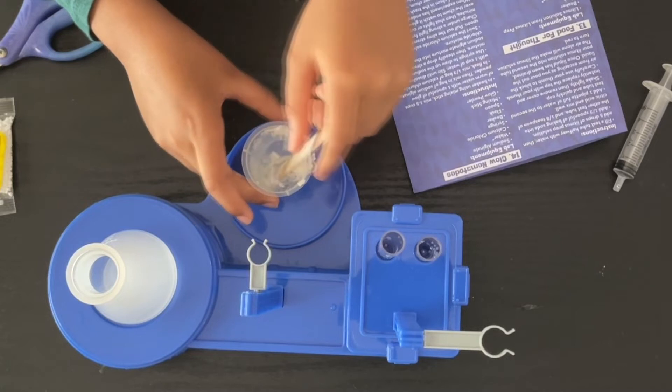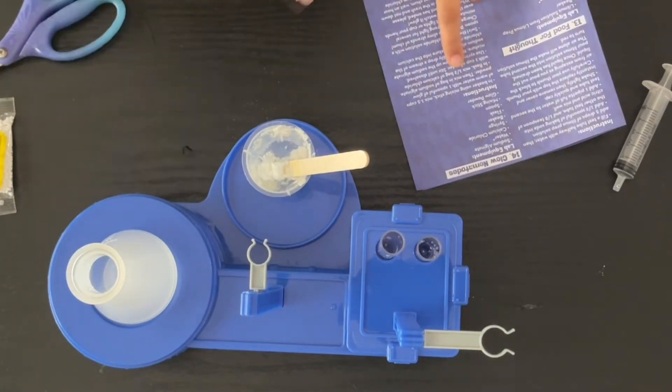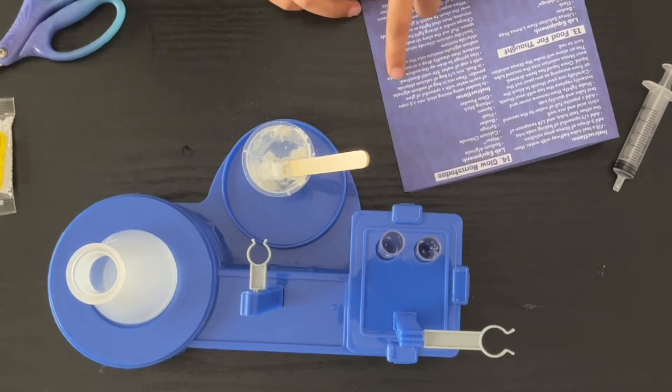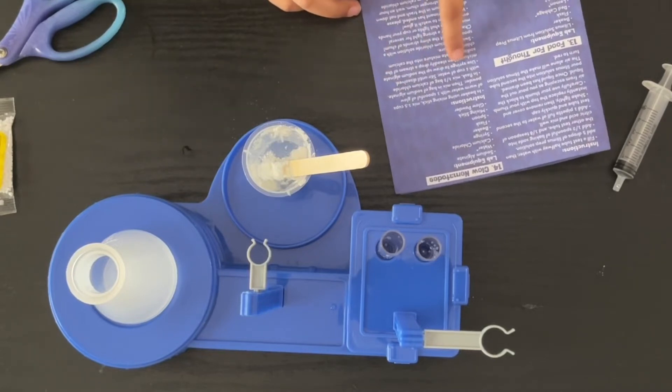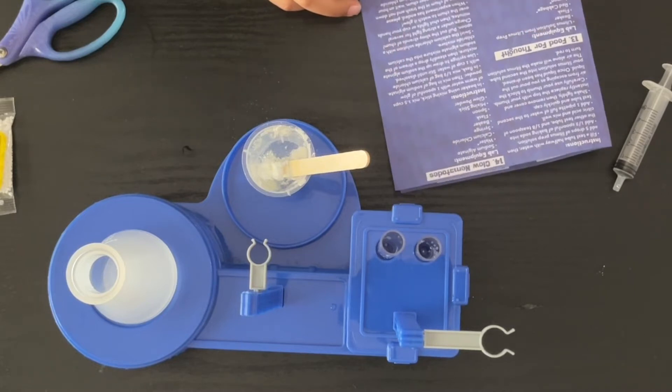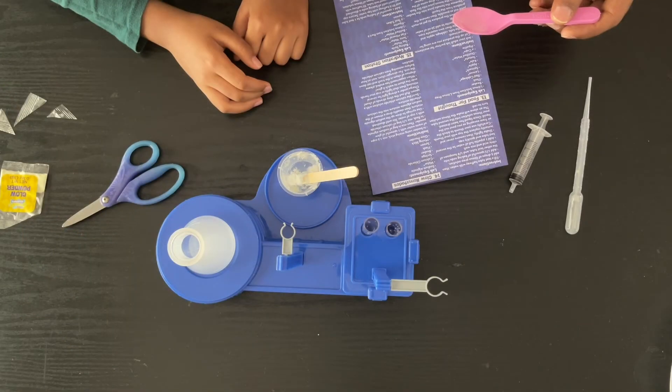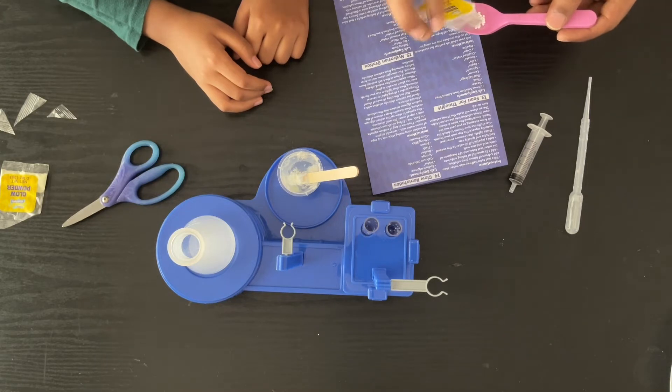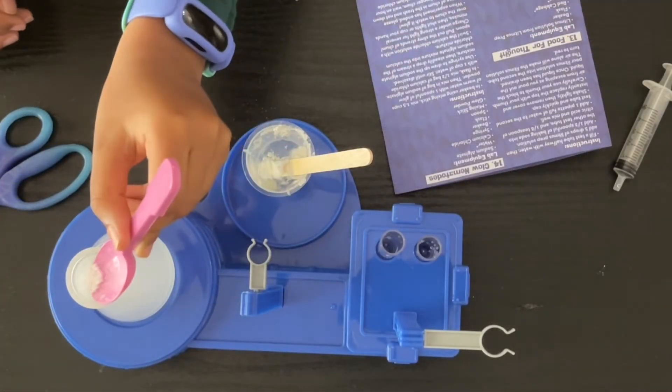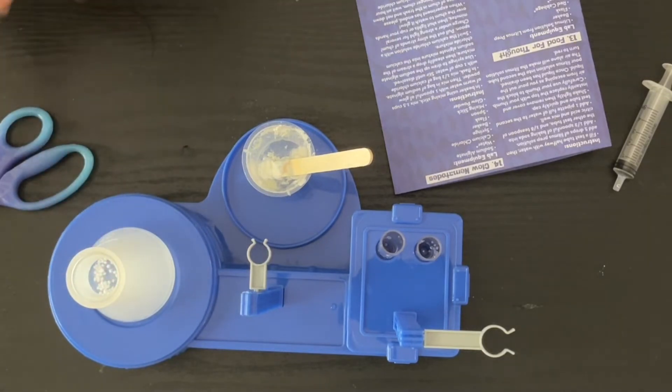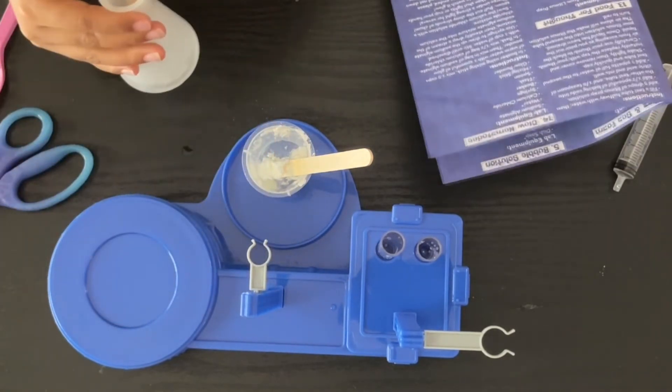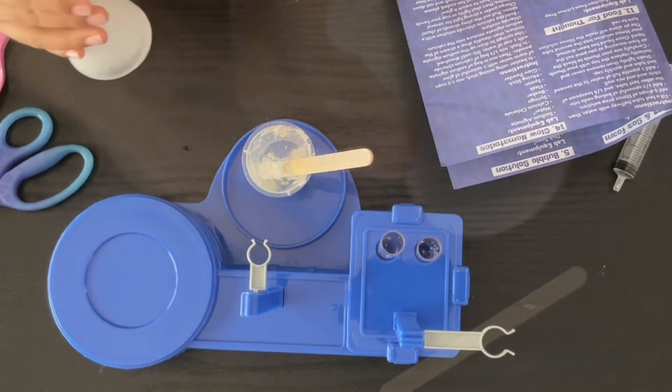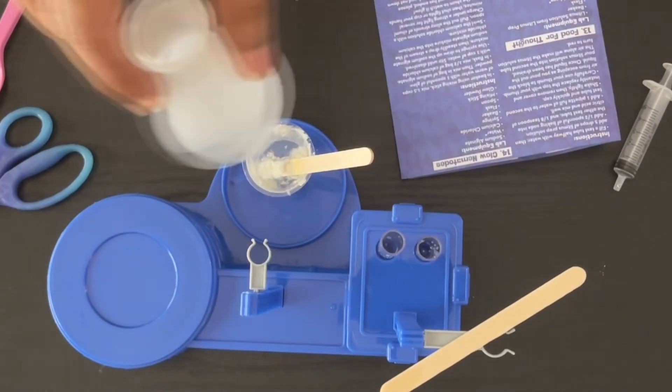Let's do the next step. In flask, mix one half bag of calcium chloride with one cup of water. Stir until dissolved. One-twelfth of that. It's all dissolved now.